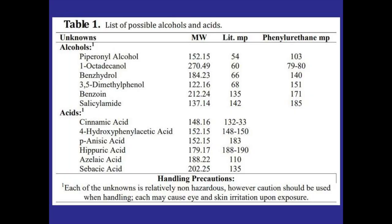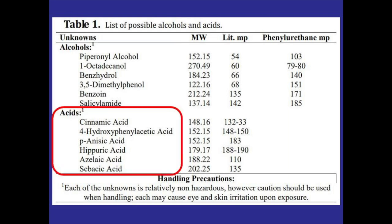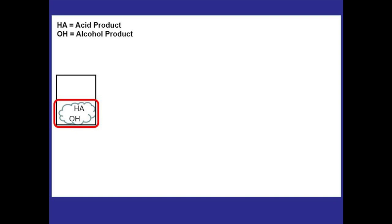For this lab we'll be given two compounds mixed together — one of these six alcohols mixed with one of these six acids. Our job is to separate the two from each other and characterize them so we can figure out which two we were initially given. All of the alcohols and the acids are solid at room temperature, so we'll be given a test tube that has a whitish powder in it containing one of the alcohols and one of the acids.